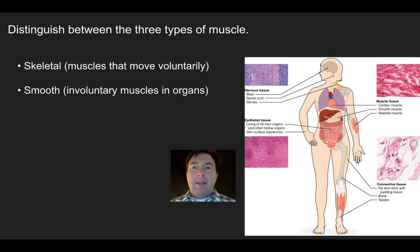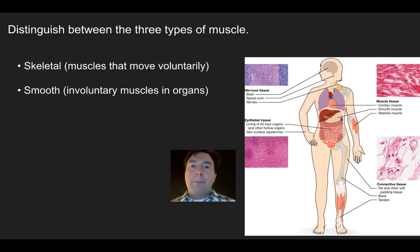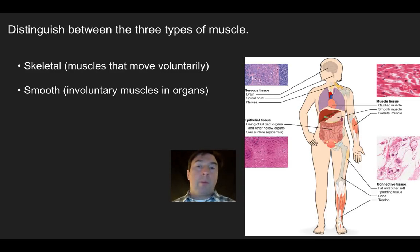Smooth muscles are involuntary and found inside organs. The biggest example is the lining of your digestive tract. When you swallow food and it moves down your esophagus, you're not consciously controlling that movement — smooth muscles handle it automatically. These flat, spindle-shaped cells line all the tubes of your body: your esophagus, stomach, intestines, and blood vessels. Your diaphragm, which controls inhalation and exhalation beneath your lungs, is also a form of smooth muscle.